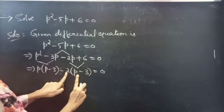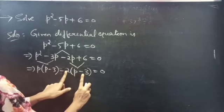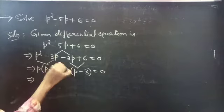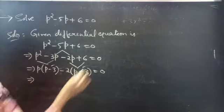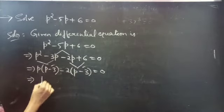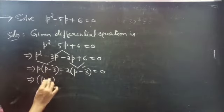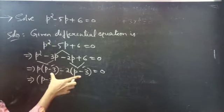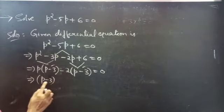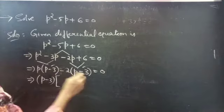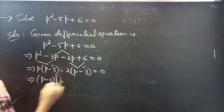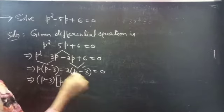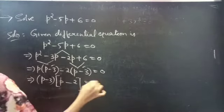Minus 2 into P is minus 2P, minus 2 into minus 3 is plus 6. Then, P minus 3 is common in both the terms. So, we are taking P minus 3 common from the two terms.